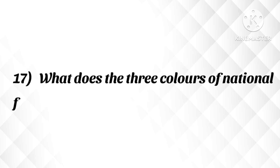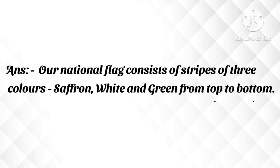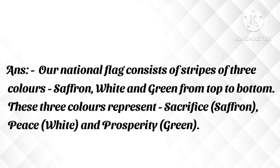Question: What do the three colors of the national flag represent? Answer: Our national flag consists of stripes of three colors — saffron, white, and green from top to bottom. These three colors represent sacrifice, peace, and prosperity.